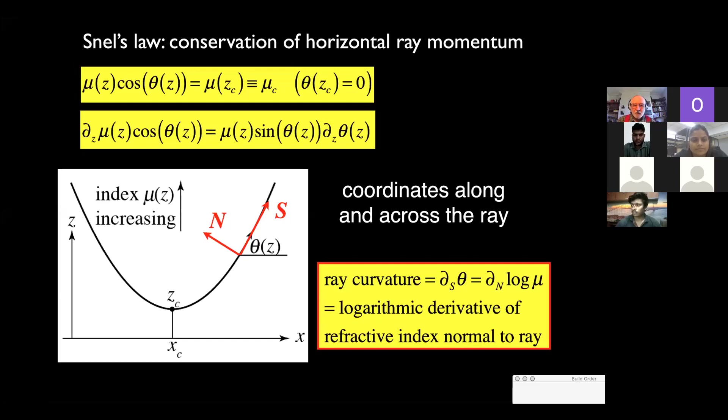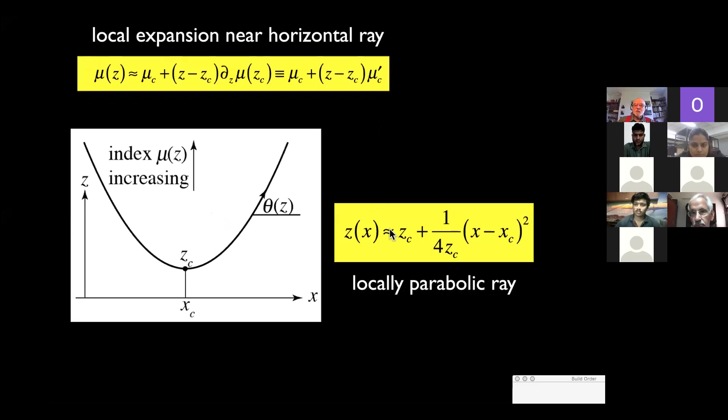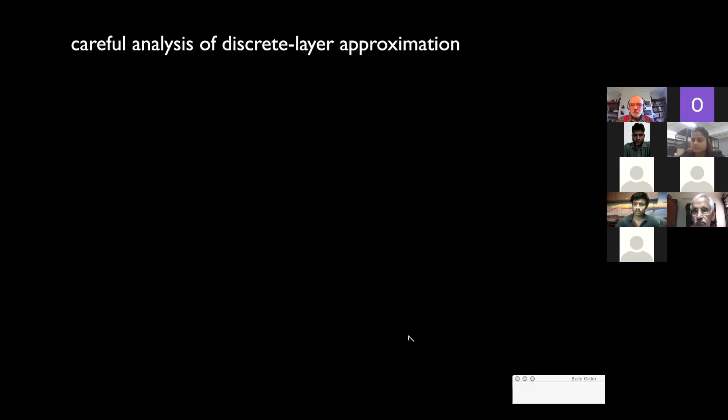If you apply this locally to the refractive index varying just linearly near the horizontal ray, then you find that the ray is locally parabolic. Very good. This is correct.